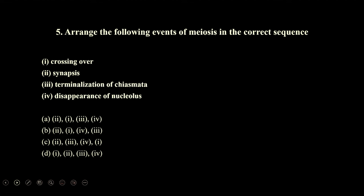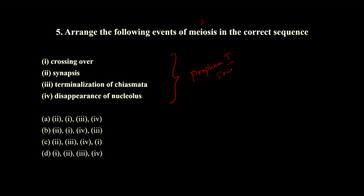The next question asks to arrange events of meiosis in the correct sequence. These are events happening in the prophase 1 sub-stages. Before crossing over, there will be formation of the synaptonemal complex — synapsis happens first. After synapsis, there will be crossing over. After crossing over, terminalization of chiasmata is going to happen.